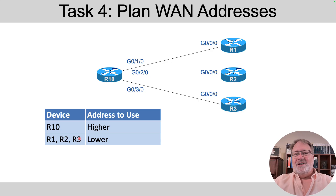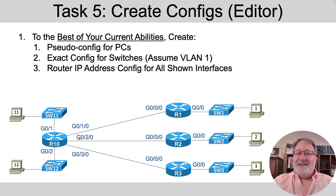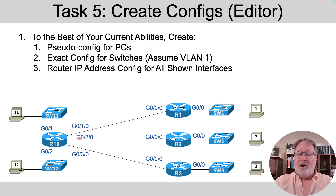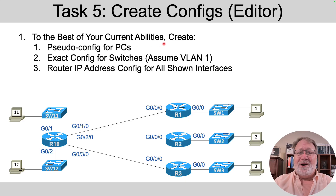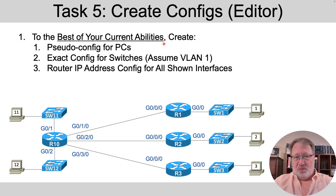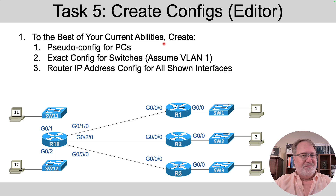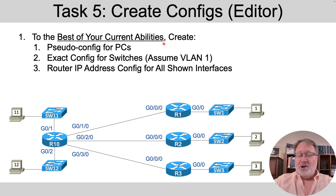Those cover the IP addressing and subnetting intensive topics. Then we turn to what you would configure. I almost didn't make this exercise because I haven't yet taught how to configure router IP addresses in this course. But it's a low bar to figure out, and many of you will have seen it elsewhere. So if you get through task four — the generic subnetting tasks — that's a great exercise. But if you feel you can configure IP addresses on routers, go ahead and start working on task five: create configuration in a text editor.